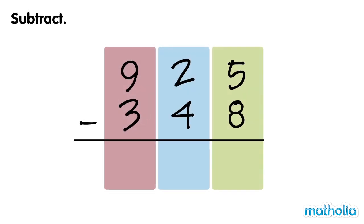Subtract. Let's find 925 minus 348. Let's start by subtracting the ones. We cannot subtract 8 ones from 5 ones.